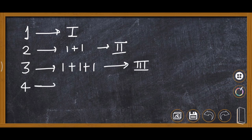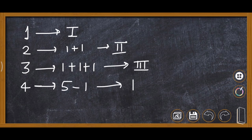For 4, we cannot write I four times — repeating a symbol 4 times is not allowed. So we write it as 5 minus 1. When there is subtraction, the smaller symbol comes before the larger one.